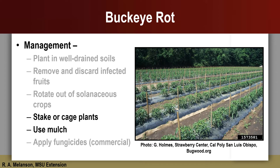Staking or caging tomatoes and using mulch can also help reduce the occurrence of buckeye rot. Staking or caging plants helps to create distance between susceptible fruits and infested soil, reducing the chance that the infested soil may reach fruit when rains or overhead watering causes splashing. Whereas staking and caging does not prevent or reduce splashing, mulch serves as a physical barrier between susceptible fruits and infested soil and can help prevent or reduce splashing of soil onto susceptible fruits.